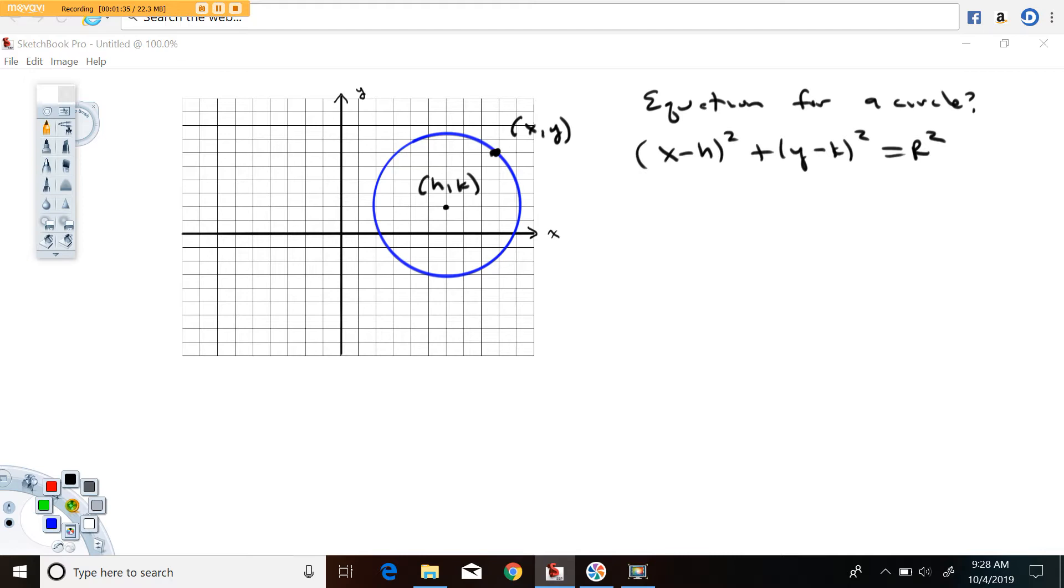The equation is coming from the fact that this distance right here, well that distance squared is equal to this distance squared plus this distance squared. If you've seen my previous video on how to calculate the distance between two points that should be familiar. I'm going to go back and redraw those a little better - this distance and this distance.